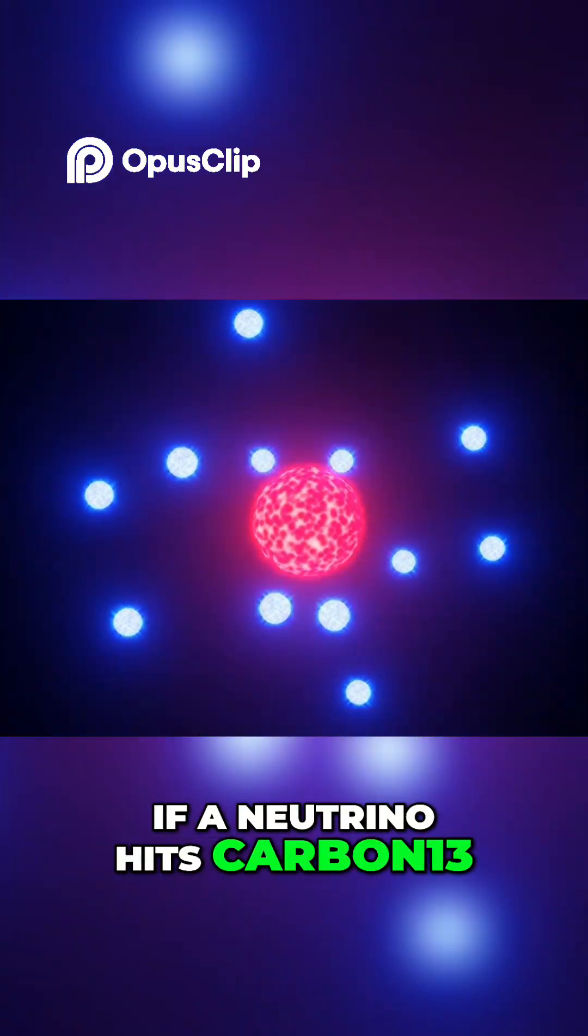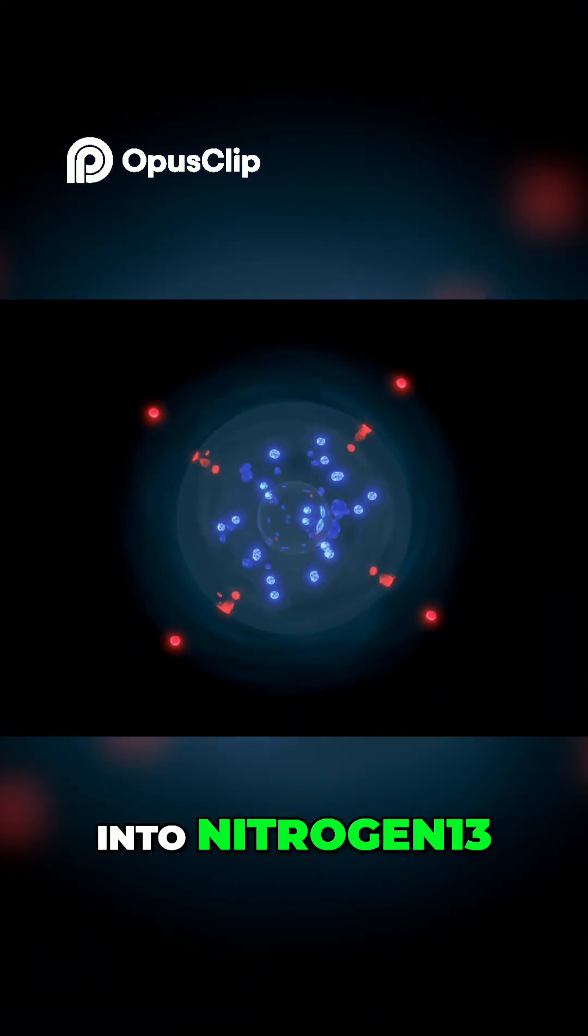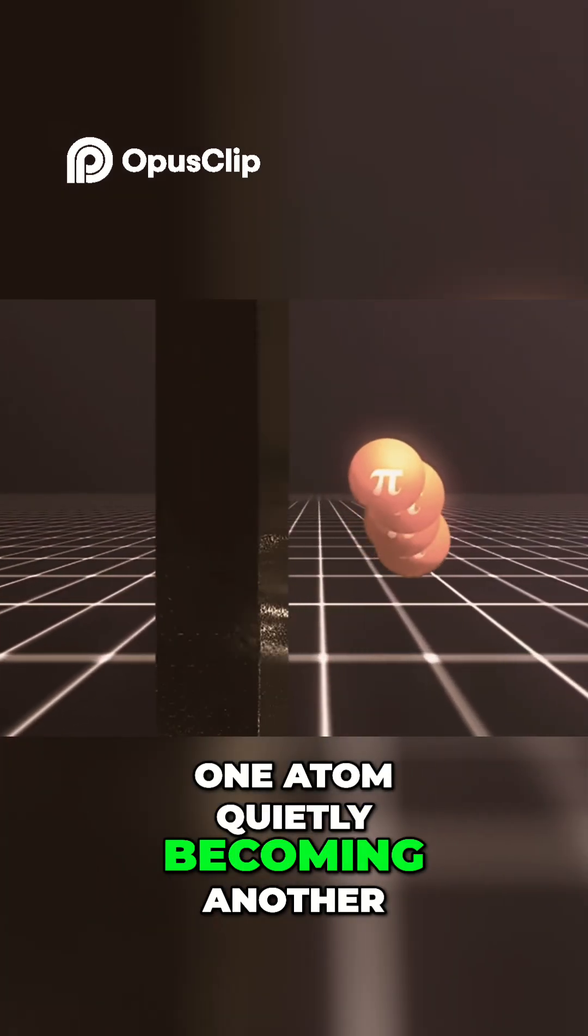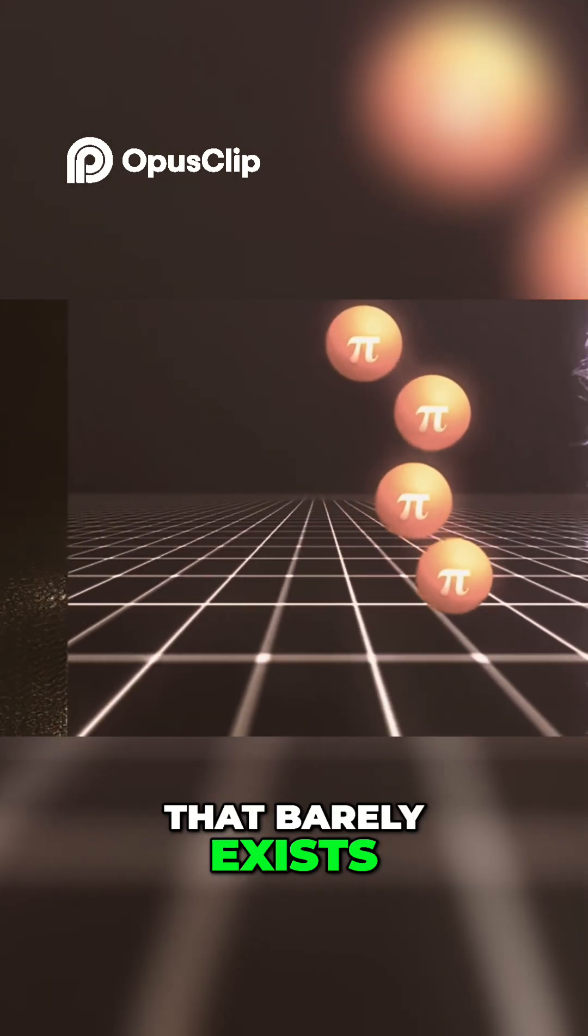If a neutrino hits carbon-13, it can transform it into nitrogen-13. That's nuclear alchemy. One atom quietly becoming another, triggered by a particle that barely exists.